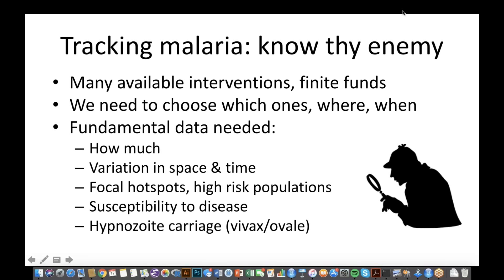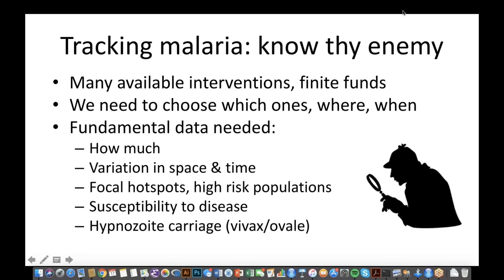Part of the challenges in moving towards the elimination of malaria or better control is that funding is flat and there are threats such as drug resistance and insecticide resistance. Malaria still causes over 200 million cases a year and over half a million deaths, with the biggest burden concentrated in children in sub-Saharan Africa. Tracking malaria — knowing where and when it is being transmitted — is very important to be able to target interventions appropriately, including understanding how much malaria there is, where it occurs, hotspots, high-risk subgroups, and who is carrying hypnozoites.